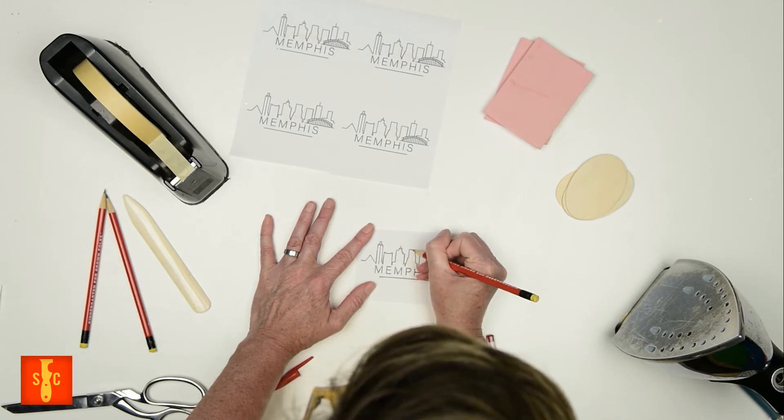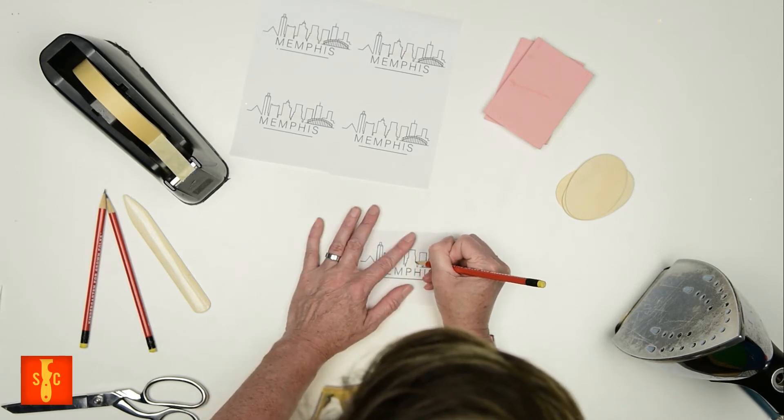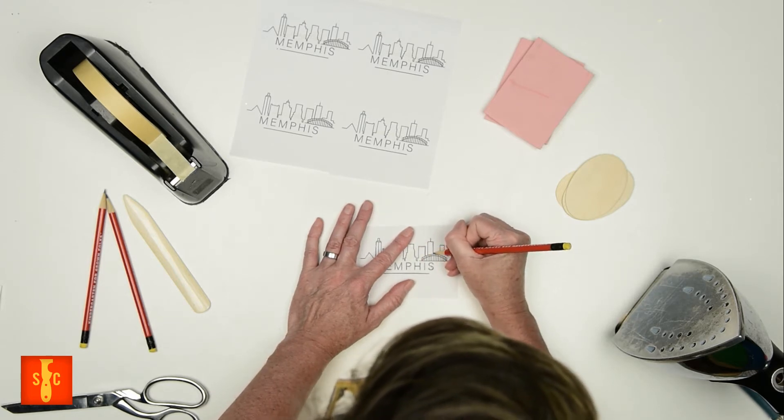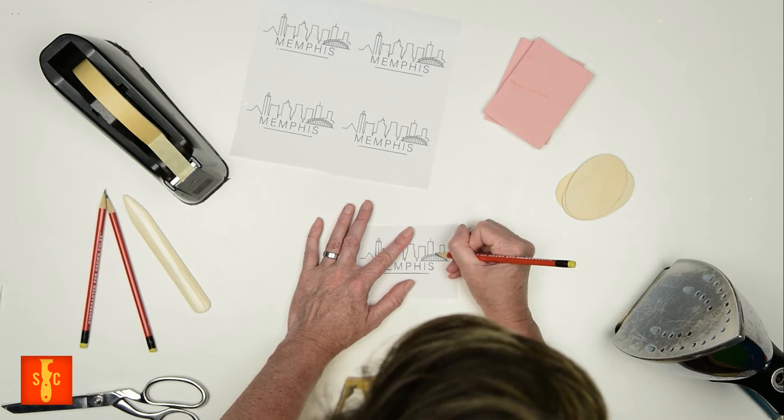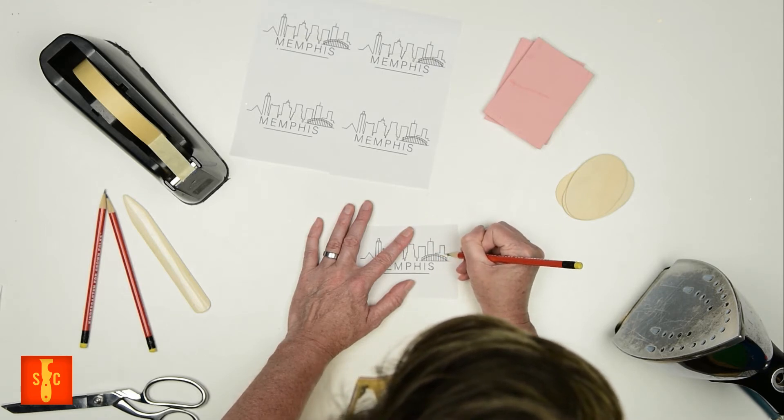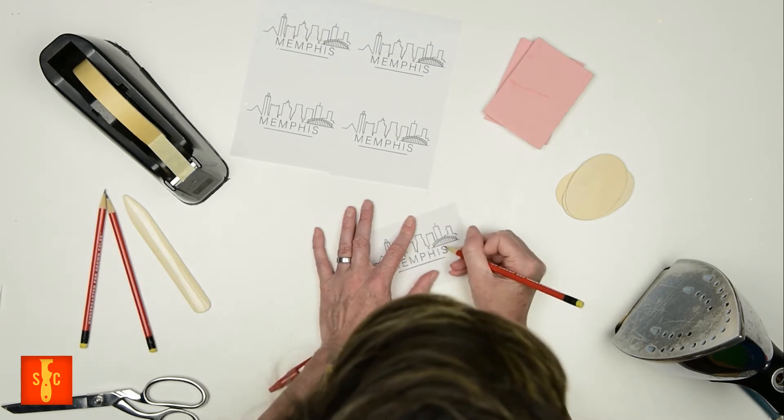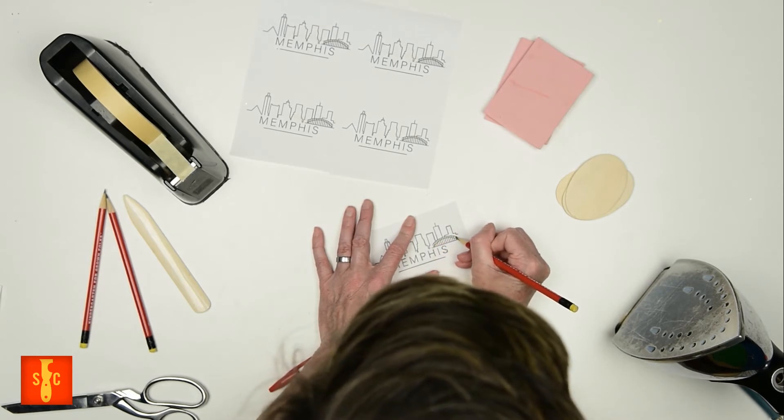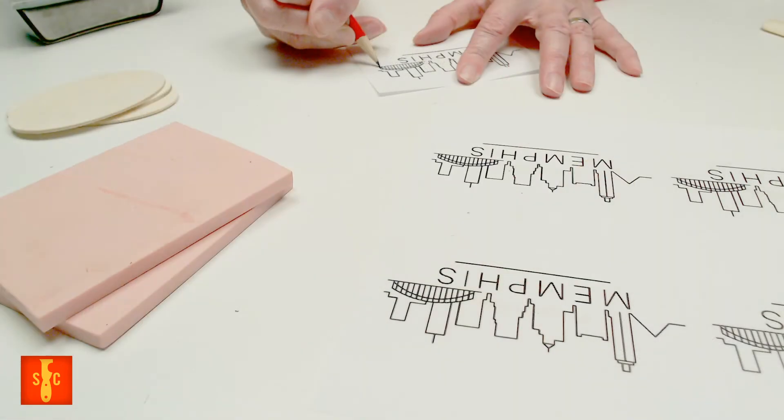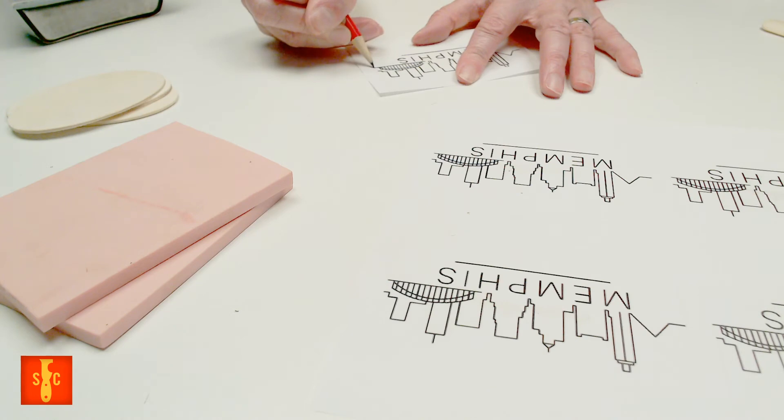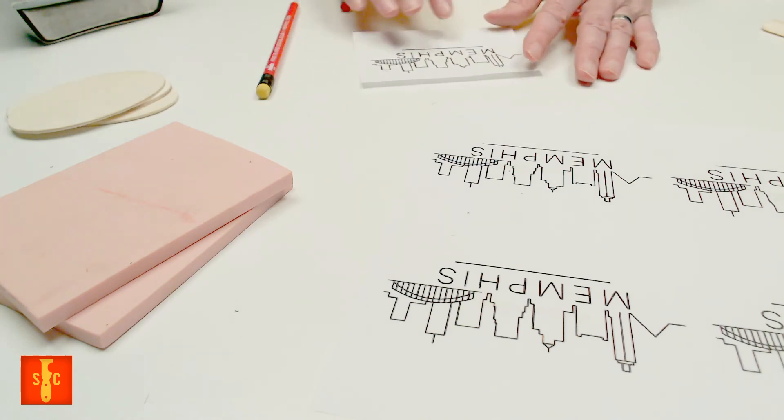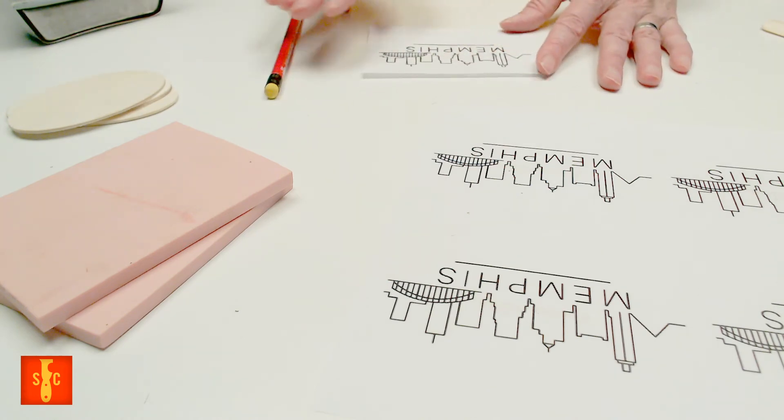All right. I'm almost there, y'all. Again, I'm just laying that pencil lead along all of those lines. And I'm getting pretty close to where they actually are. It's a little sloppy. I'll admit that to you now. All right. So I've got my whole image has been traced. And I'm going to lay that down.